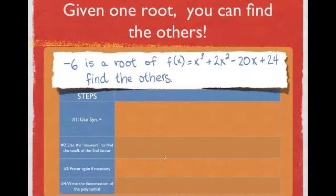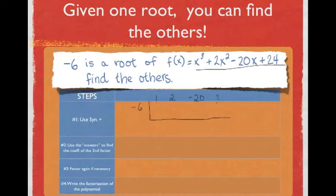Given one root, you can find the others. Negative 6 is a root of this polynomial, so we can find the other roots. I'm going to use synthetic division. Across the top, I'll write my coefficients. Notice there are none missing, so I don't have to fill in with any zeros.